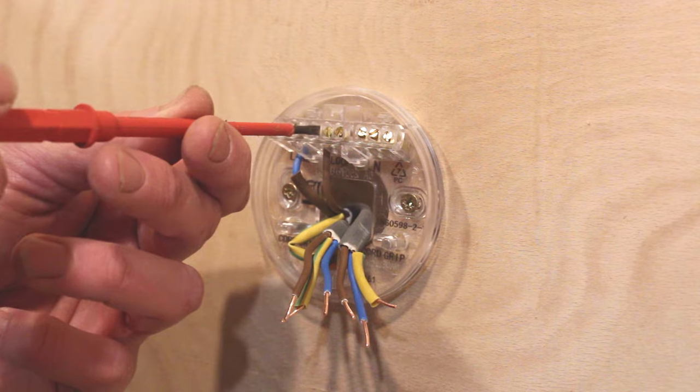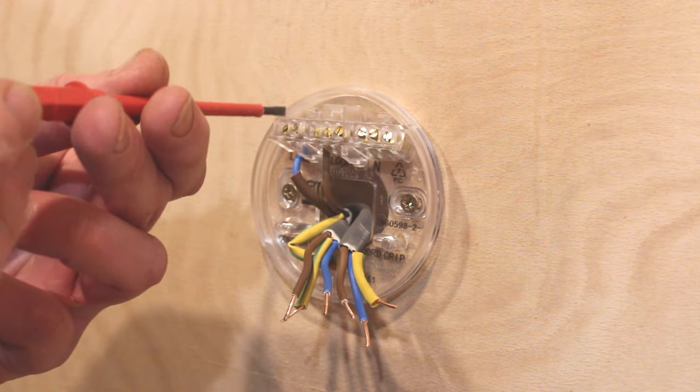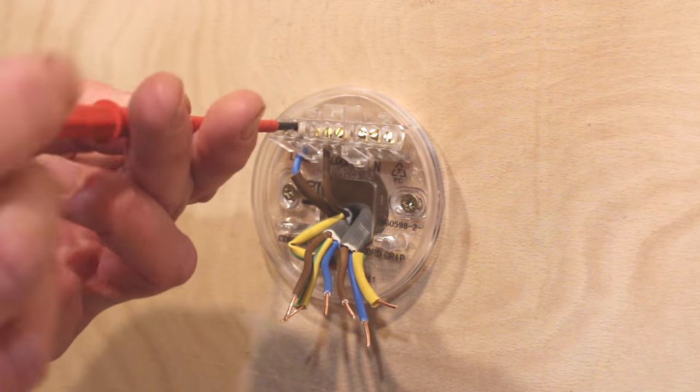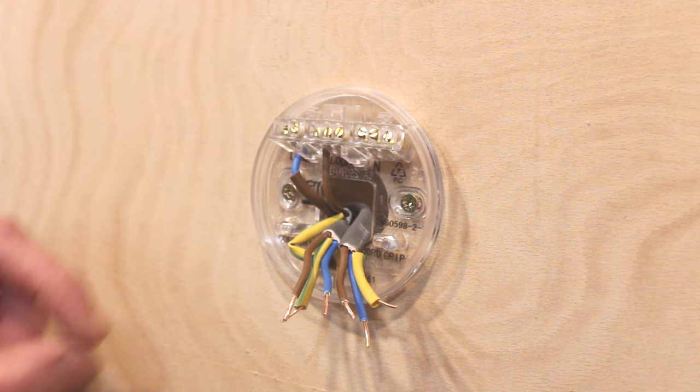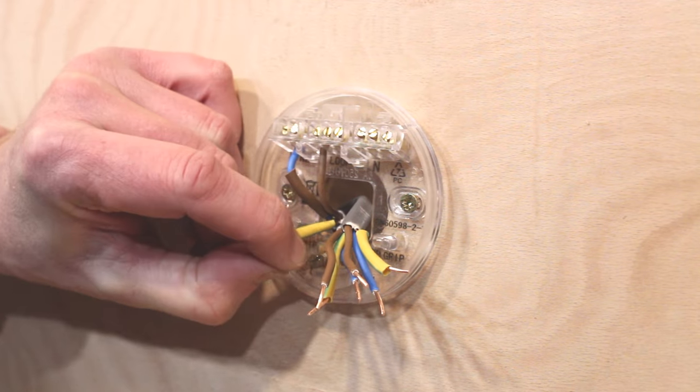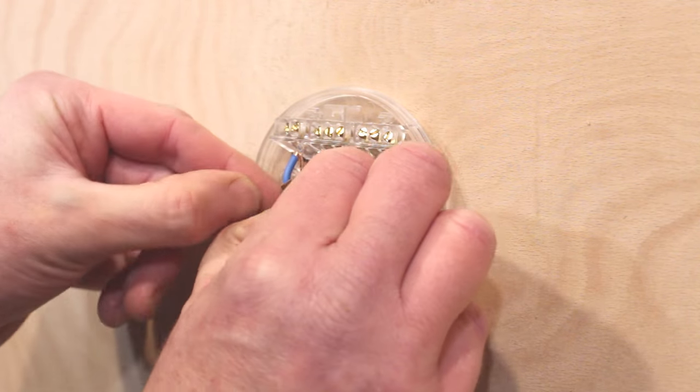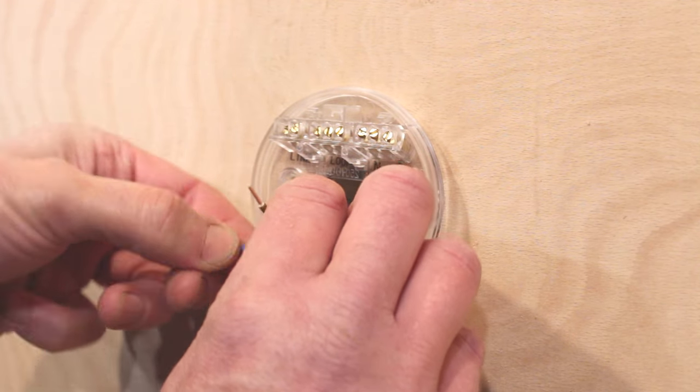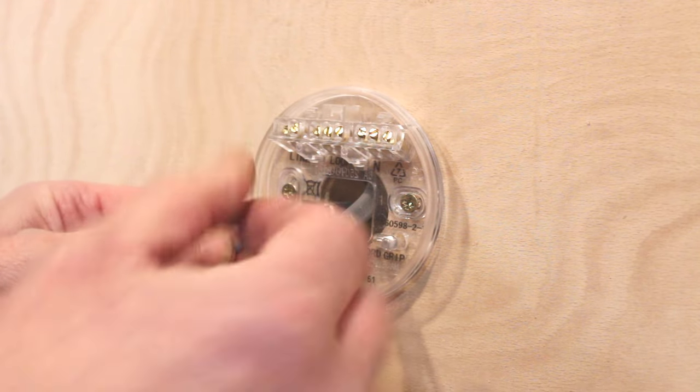So lastly you just want to take off the switch wires. So first of all take the permanent live off and the switch live with the brown sleeving on it and the earth. Give them all a little tug and just bend them back so they don't fall back into the hole.